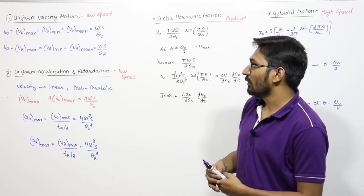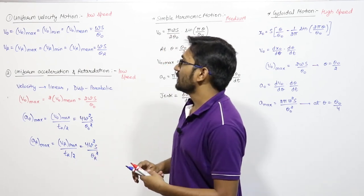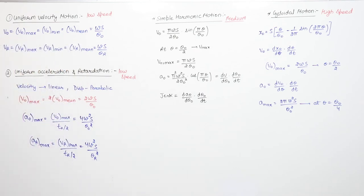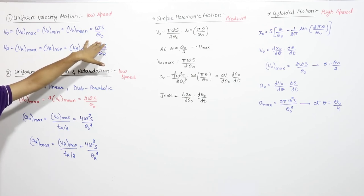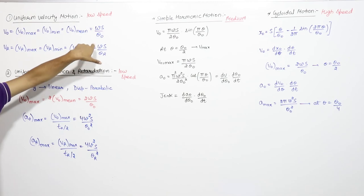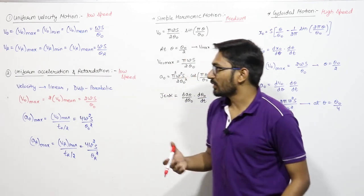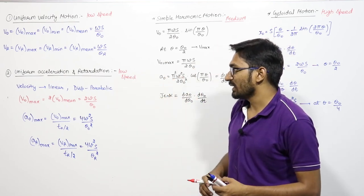First is uniform velocity motion, used for low speed cams. When velocity is uniform, the outstroke velocity and return velocity are constant — maximum equals minimum equals mean. Outstroke velocity = ωS/θ₀ and return velocity = ωS/θ_r.